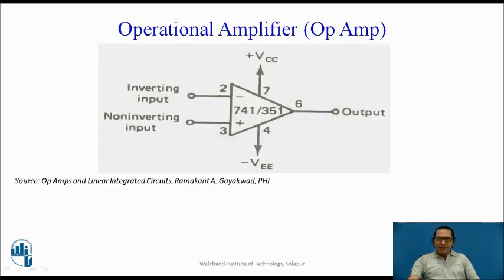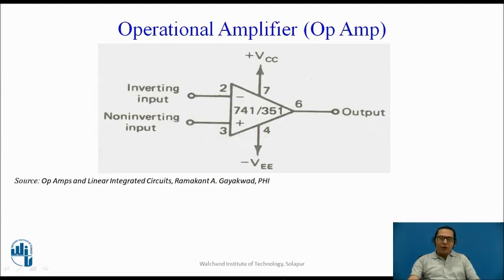This is the symbolic representation for op-amp, particularly for op-amp 741. As we know, there are two input terminals — inverting input and non-inverting input — and there is one output terminal, which is pin number 6.